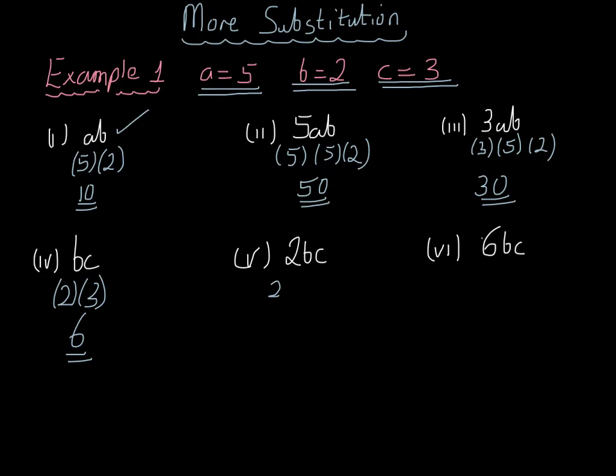2bc would be 2 in brackets, multiplied by another 2 in brackets, multiplied by 3. And 2 times 2 is 4, times 3 is 12. And 6bc would be 6 in brackets, multiplied by b which is 2, multiplied by c which is 3. 6 times 2 is 12, and 12 times 3 is equal to 36. And they're the first 6 parts.